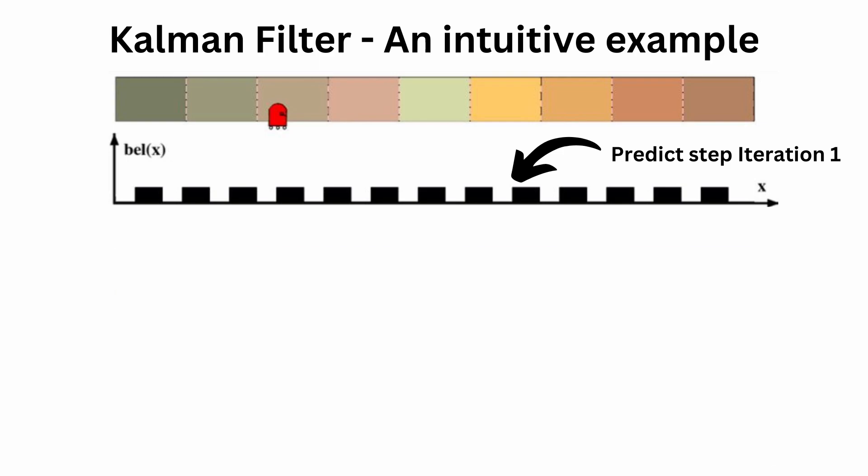The next step in this iteration is the update step. The robot gathers its first measurement and observes the color of the wall. While there are 9 color segments on the wall, it observes only one of them in the current position. The probability of measuring the colors given its position distribution is illustrated in red. The prior distribution from the prediction step and p(z|x) are combined to get the new position estimate in black — belief of x. You have a higher bar in one of the positions based on this combination.